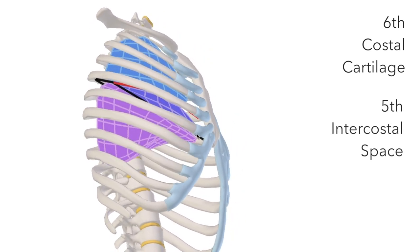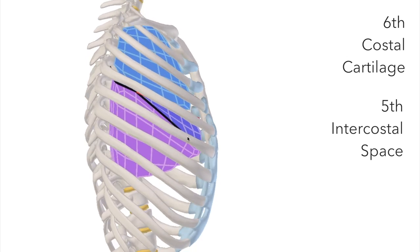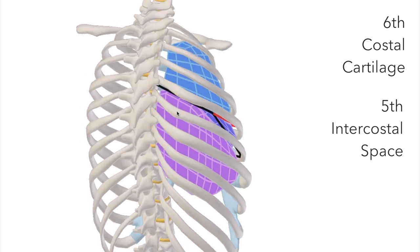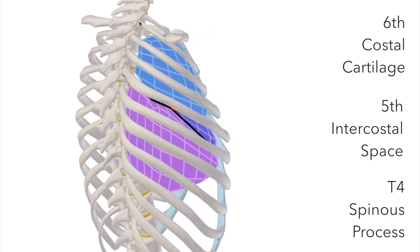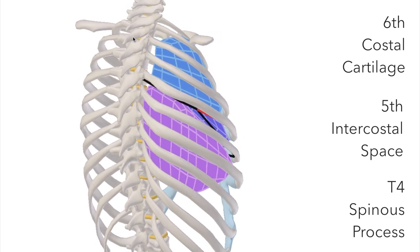It crosses the fifth intercostal space laterally, so that's the space between rib six and rib five. And then it finishes around the spinous process of the fourth thoracic vertebra. So that's T1, T2, three, four, and there's its spinous process, and that's pretty damn close.